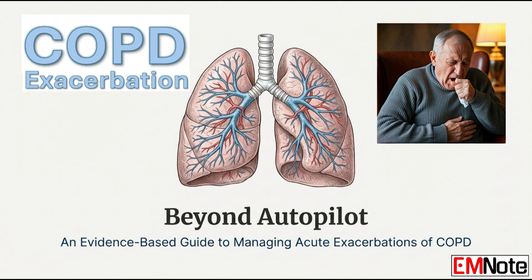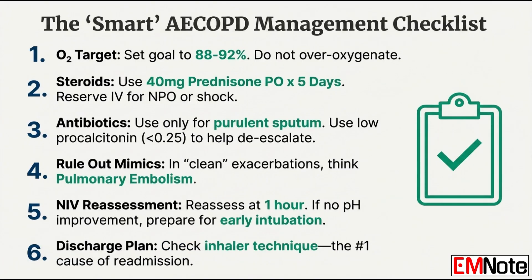To synthesize the key action points: first, titrate oxygen to a target of 88 to 92%. Use oral prednisone 40 mg daily for 5 days. Maintain a high suspicion for PE in clean exacerbations. Objectively reassess NIV failure within the first hour of starting it. Following this approach will improve patient safety dramatically. And the work isn't done at discharge — improper inhaler technique is consistently the number one preventable cause of readmission for these patients.